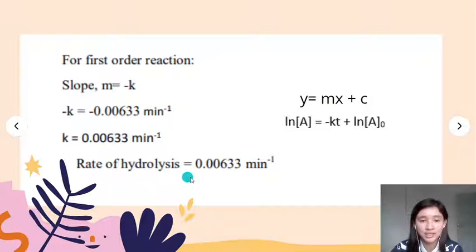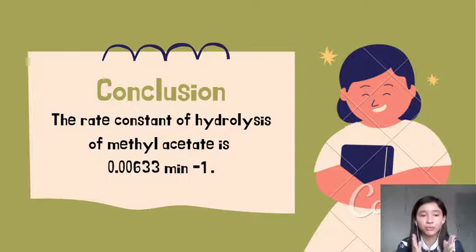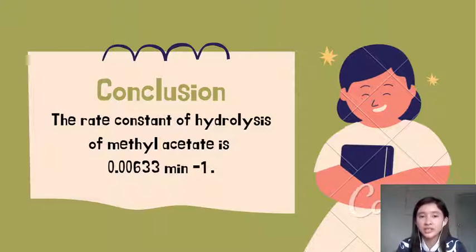We will get the rate of hydrolysis equal to 0.00633. We've already achieved our objective, which is the rate constant. We found out the rate constant of the hydrolysis of methyl acetate is 0.00633.